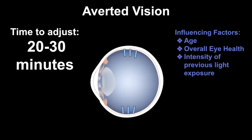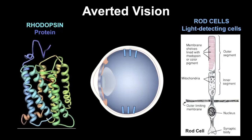So why does it take this long? It's because of this molecule right here — a protein called rhodopsin. It's a light-sensitive protein found in the rod cells of the retina in the human eye, as well as many other animals. When a photon of light strikes the rod cells, the rhodopsin becomes activated and allows the eye to perceive objects in low light conditions.